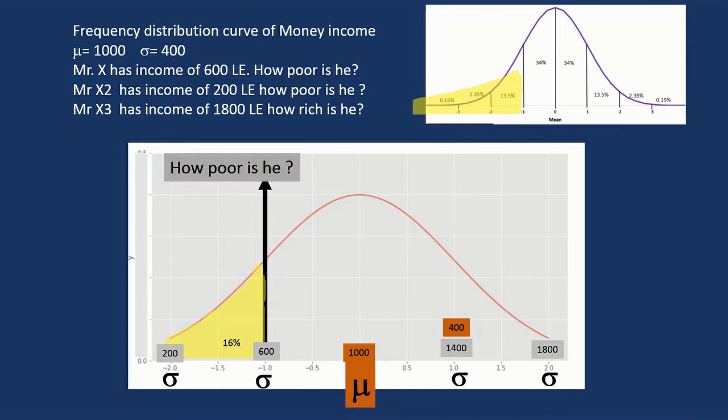What about Mr. X2 with an income 200? How poor is he? So 200 is at two standard deviations from the mean. What's below it? This is two and a half percent of the people.